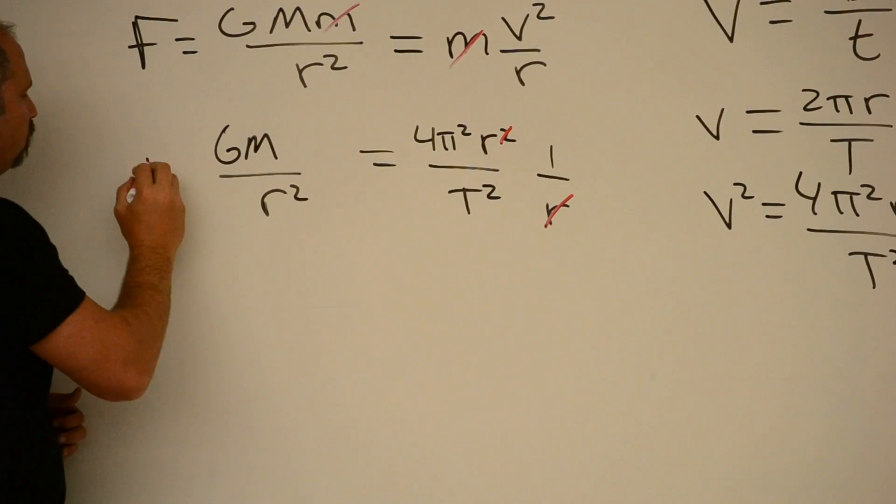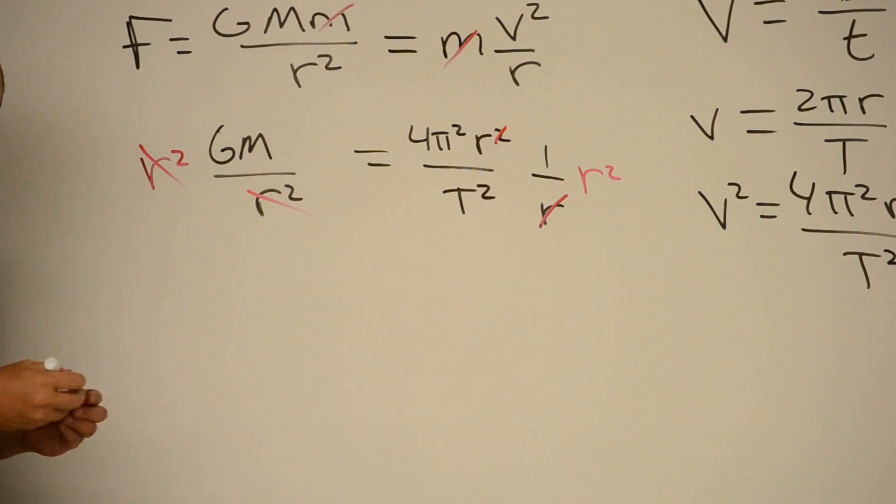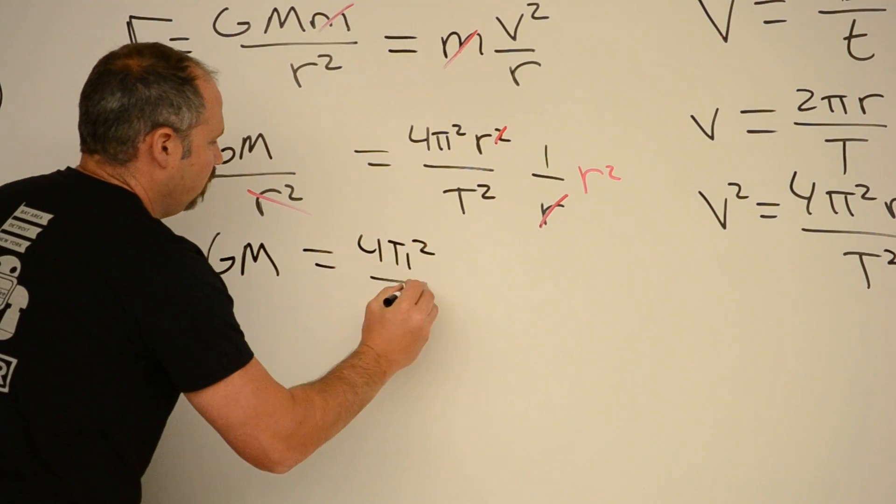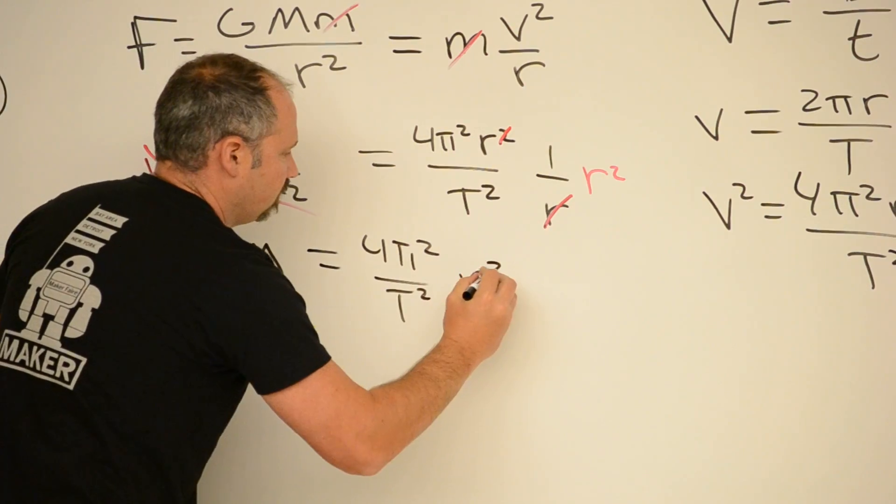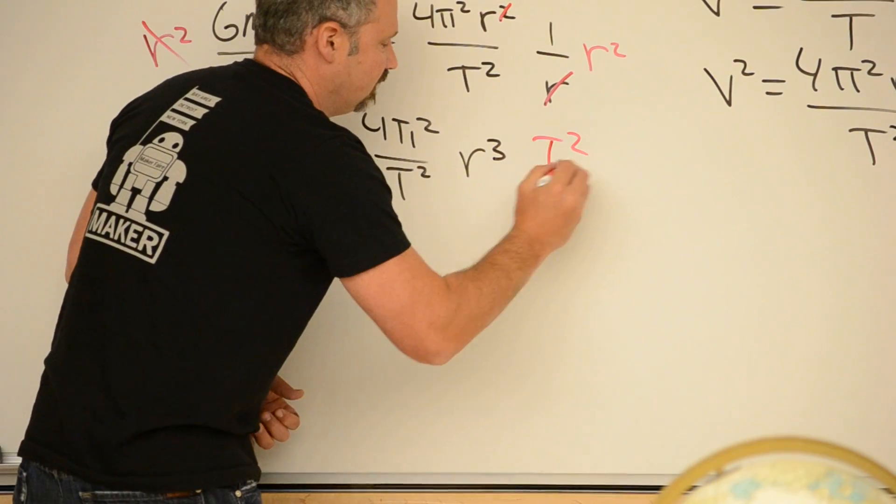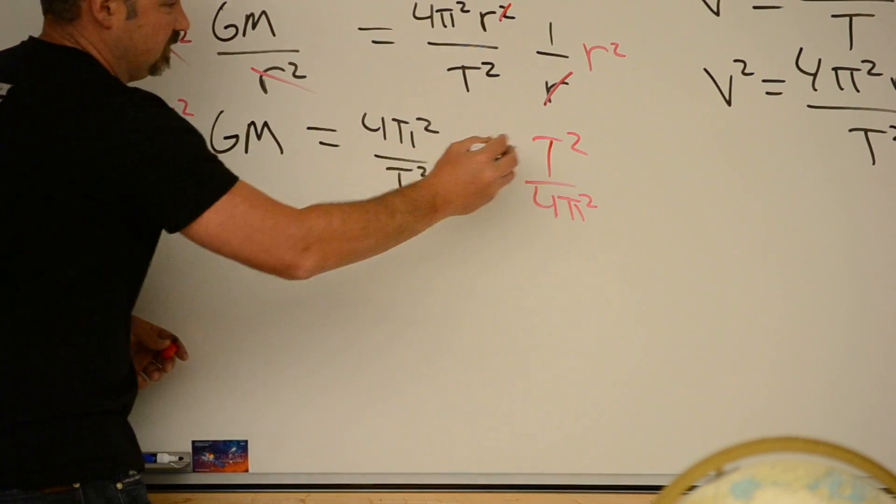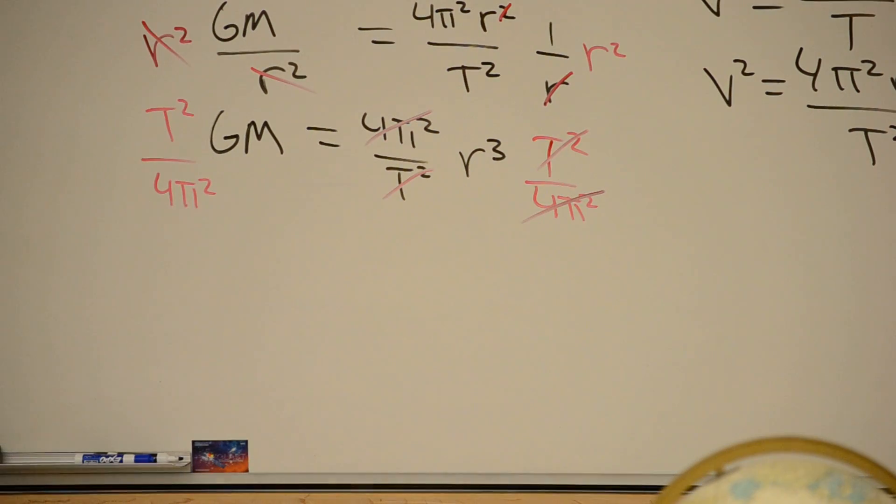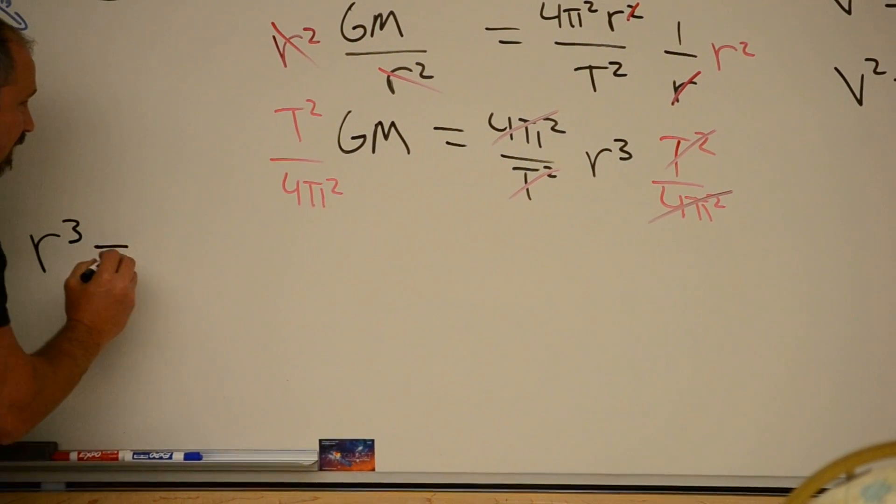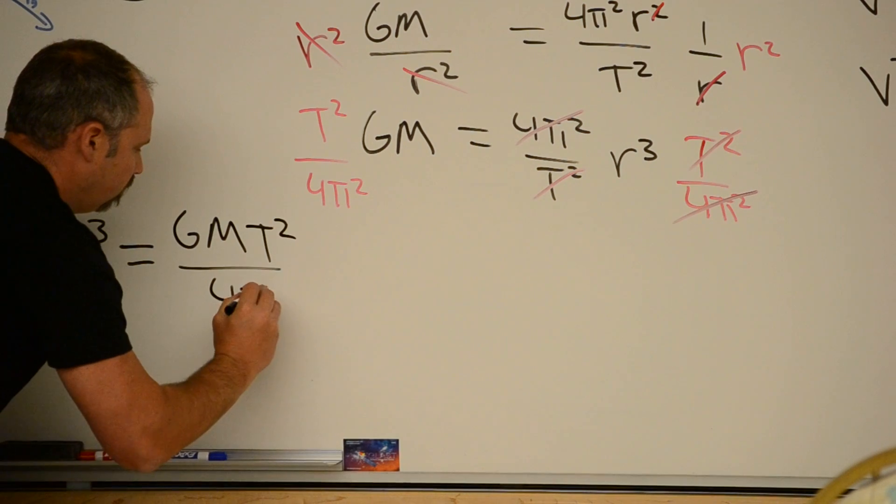So we want to isolate for r. So let's combine our r terms. So I'll multiply both sides by r squared. And if I do that, these guys cancel. And now I just have GM equals 4π² over T squared. And r squared times r is r cubed. And now I will boldly multiply both sides by T² over 4π². And you can see that here things cancel. And I've now isolated r cubed. And I'll just write it out here. r³ is equal to GM·T² all over 4π².